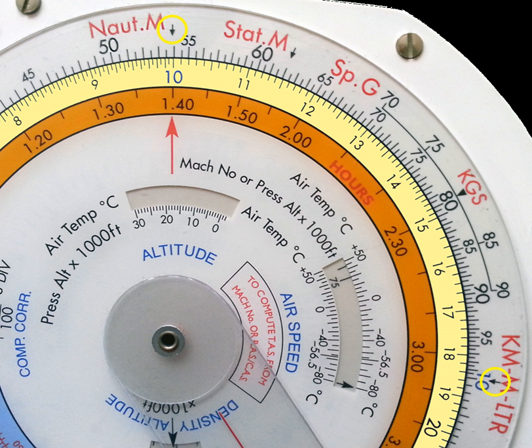The back of the E6B is used to find ground speed and determine how much wind correction you need. To find ground speed and true heading: